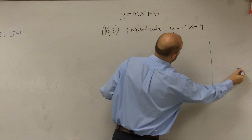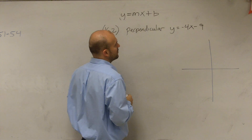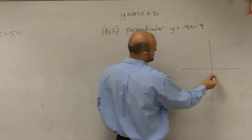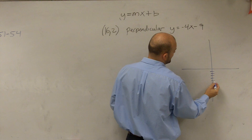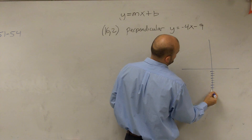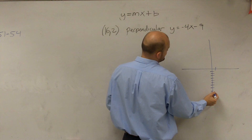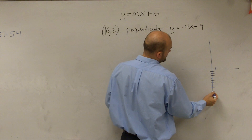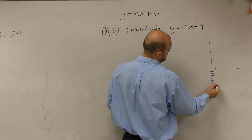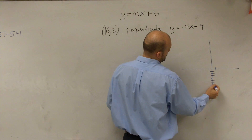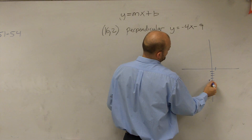First thing I'm going to do is sketch this line: negative 4x minus 9. So I go down 9 — 1, 2, 3, 4, 5, 6, 7, 8, 9. That's negative 4 for the slope, so I'm going to go up 4 and to the left one — 1, 2, 3, 4.